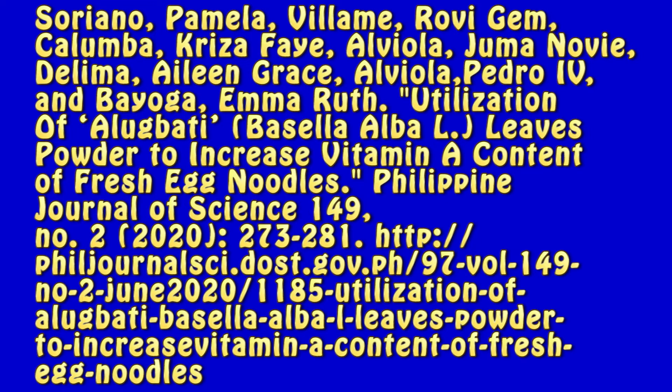The title of the article is 'Utilization of Alugbate or Bacilla Alba L. Leaves Powder to Increase Vitamin A Content of Fresh Egg Noodles' — in quotation marks. Followed by the journal title, Philippine Journal of Science, volume 149, issue number 2, publication date (2020), pages 273–281, and finally the URL.